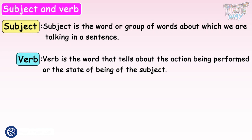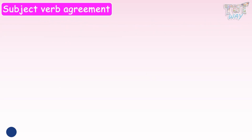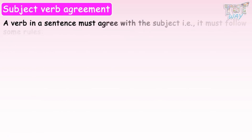Now let's learn, what is this subject-verb agreement? A verb in a sentence must agree with the subject. That is, it must follow some rules that we will learn with the help of examples.